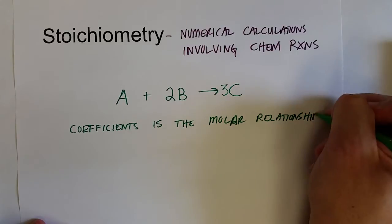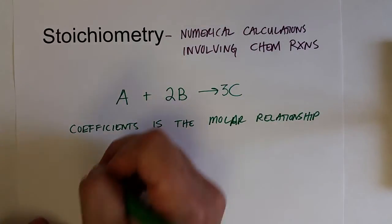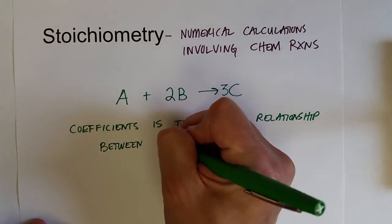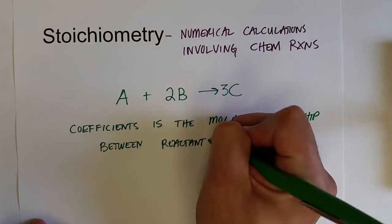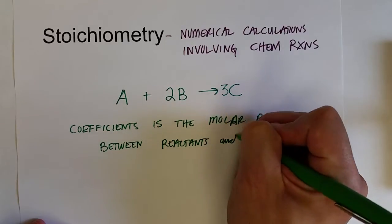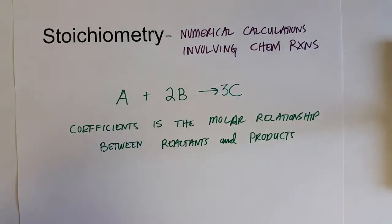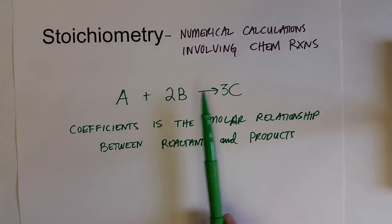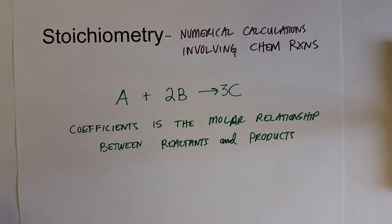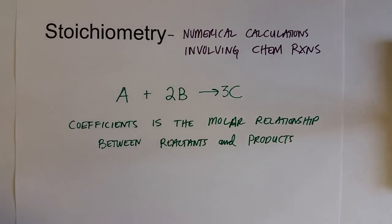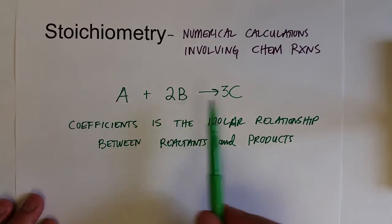That molar relationship between reactants and products is going to be very important. What this says is that for every 2 moles of B that I have, I can make 3 moles of C. For every 1 mole of A, I need 2 moles of B to make 3 moles of C.